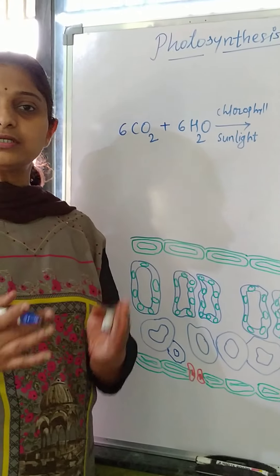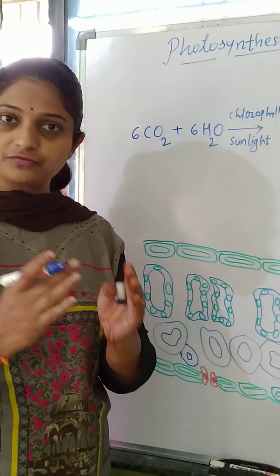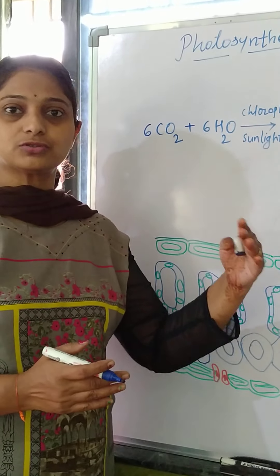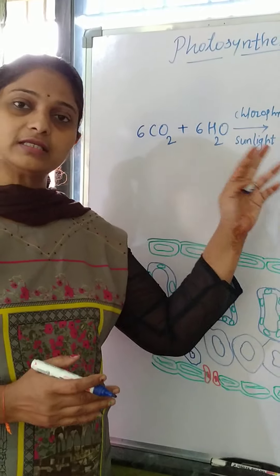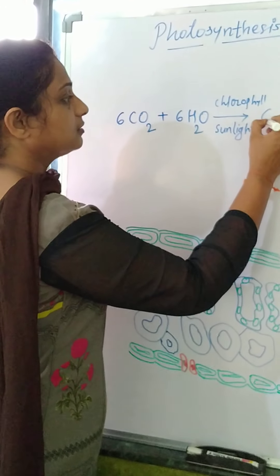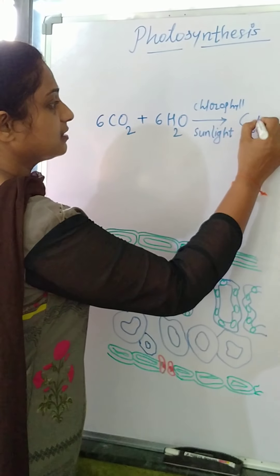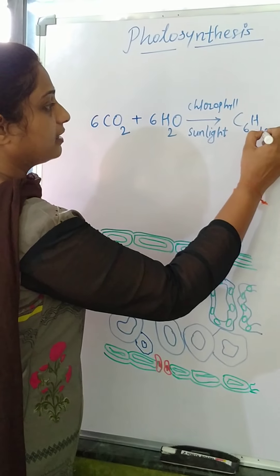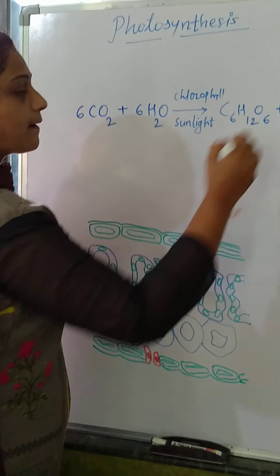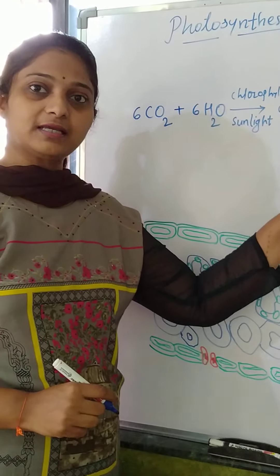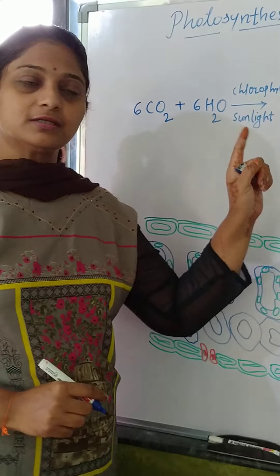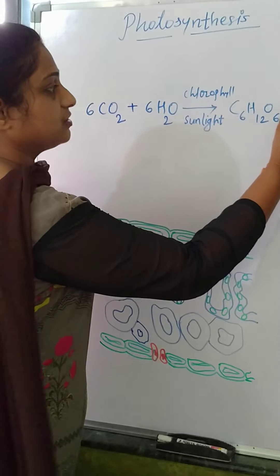Carbohydrate is in the form of glucose. What is glucose? It is a sugar — a form of sugar just like lactose, sucrose. In the same way glucose is there. So it forms C6H12O6, and at the same time it also releases some oxygen.